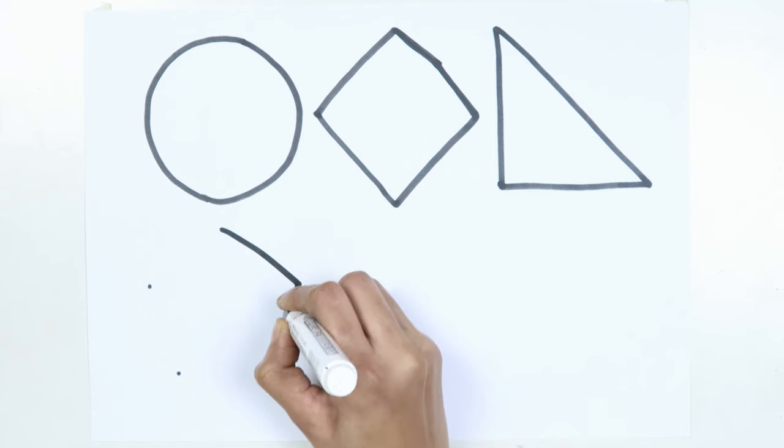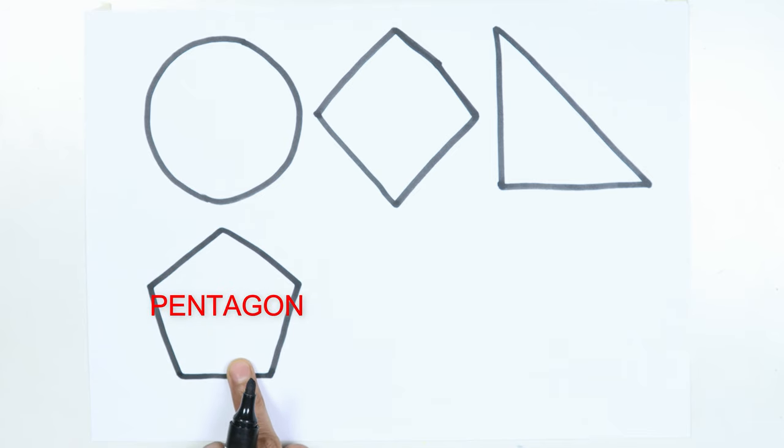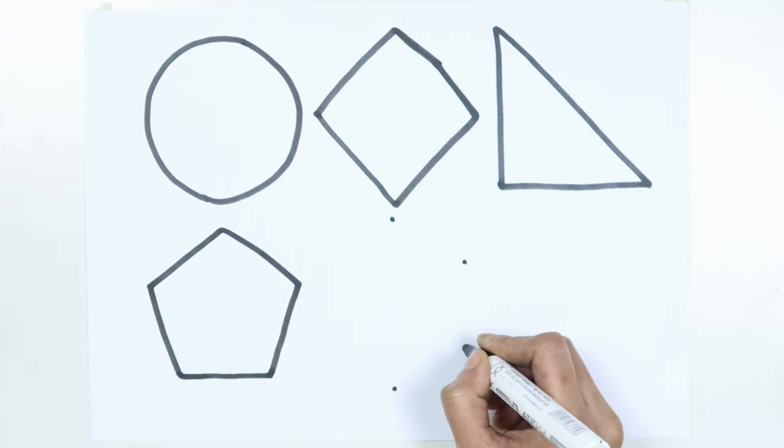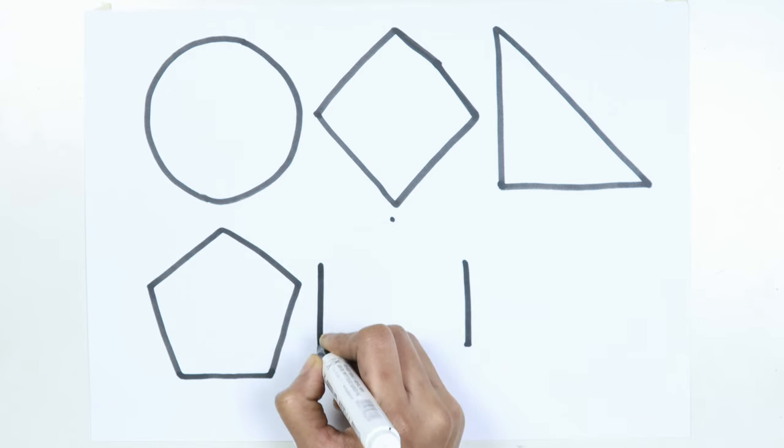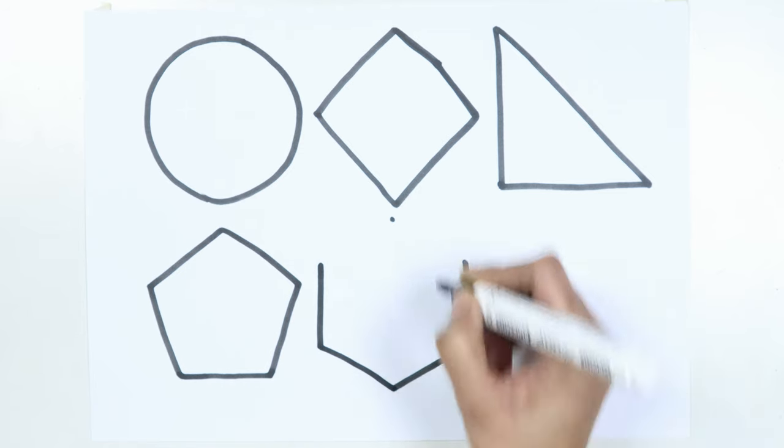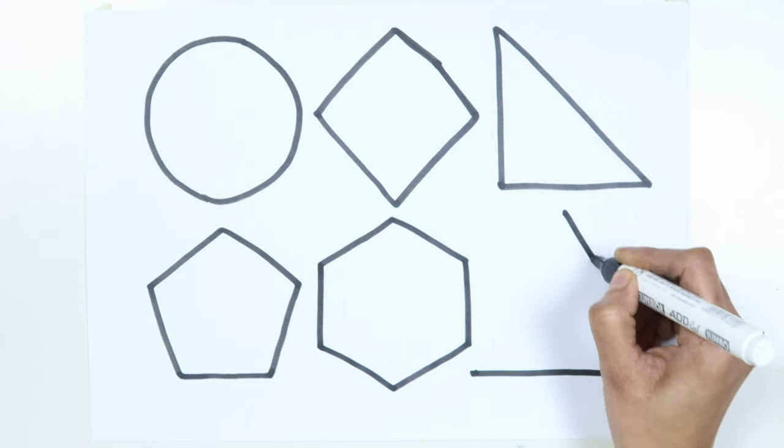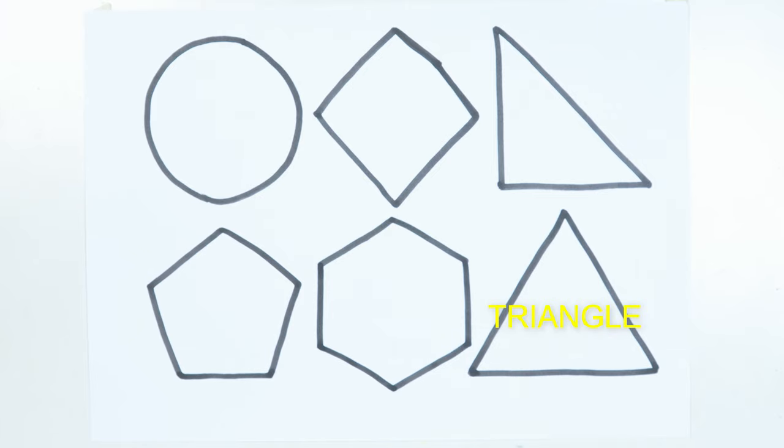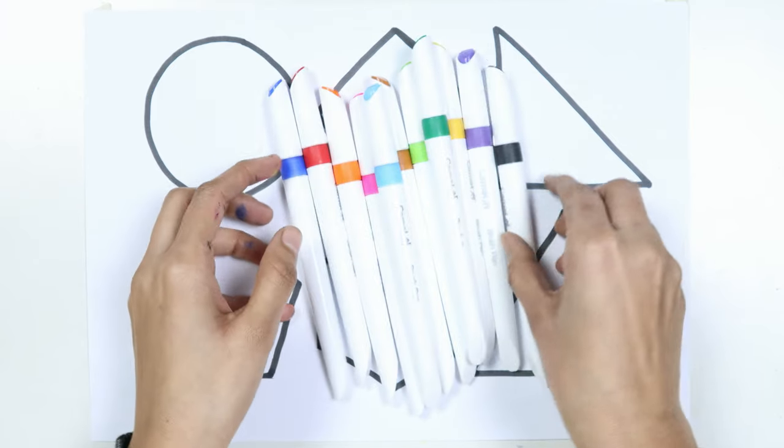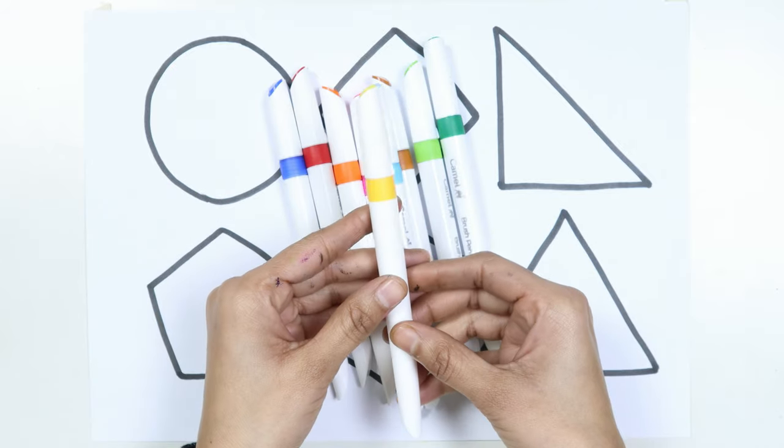Hexagon. Triangle. Let's learn some colors: black color, purple color, yellow color.